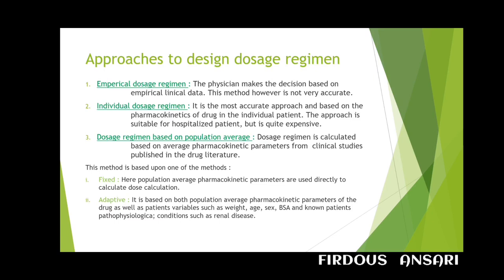The individual dosage regimen is the most accurate approach. It is based on the pharmacokinetics of the drug in the individual patient, derived from measurement of the plasma concentration of the drug. This approach is suitable for hospitalized patients but is quite expensive.